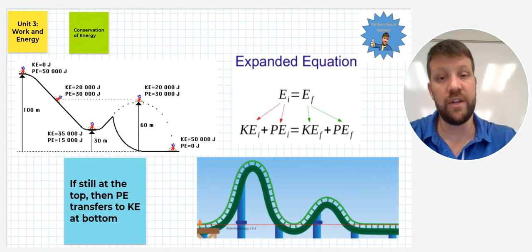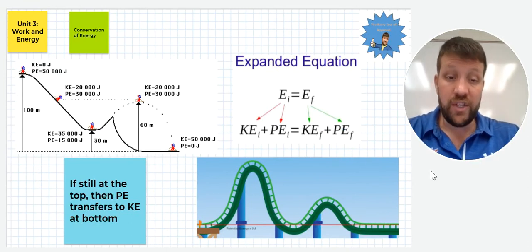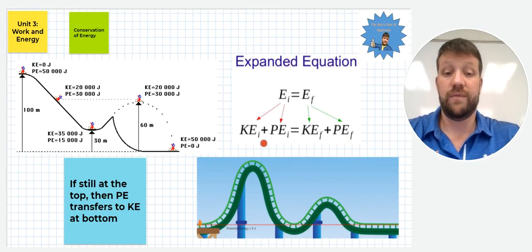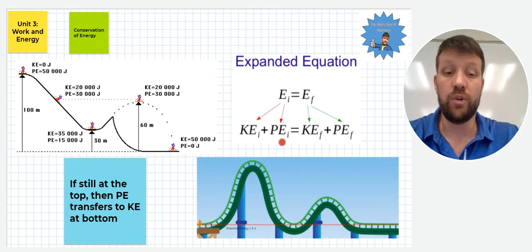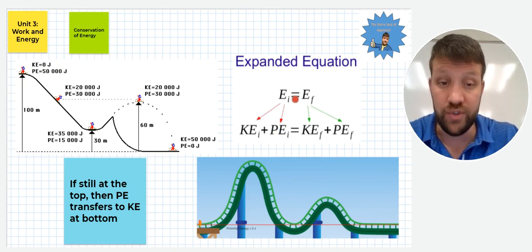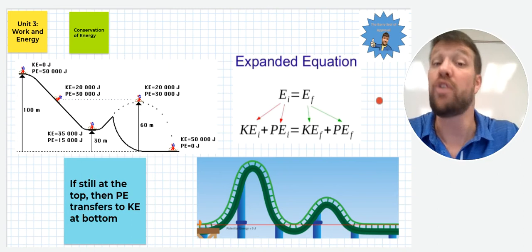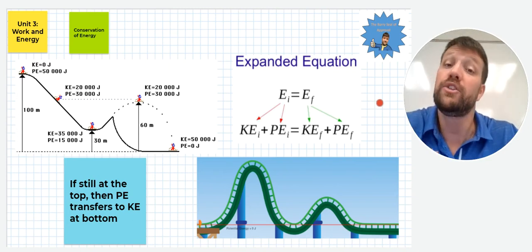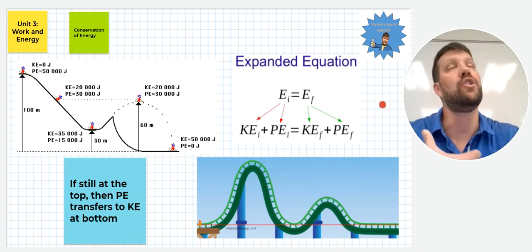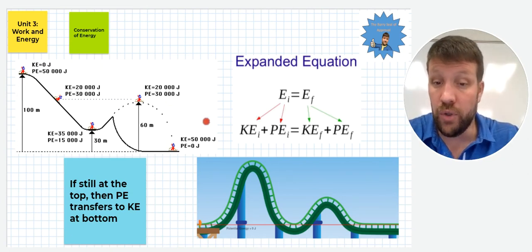All right, conservation of energy, this is our last topic here. So if we expand our equation for mechanical energy and look at conservation, we're going to have the total kinetic initially and the total potential initially. That's going to stay constant. The total of those, the energy going into the system is going to equal the energy at the final position in the system or at any position throughout the system, assuming no losses. So we're assuming no friction, no heat loss, no anything like that.